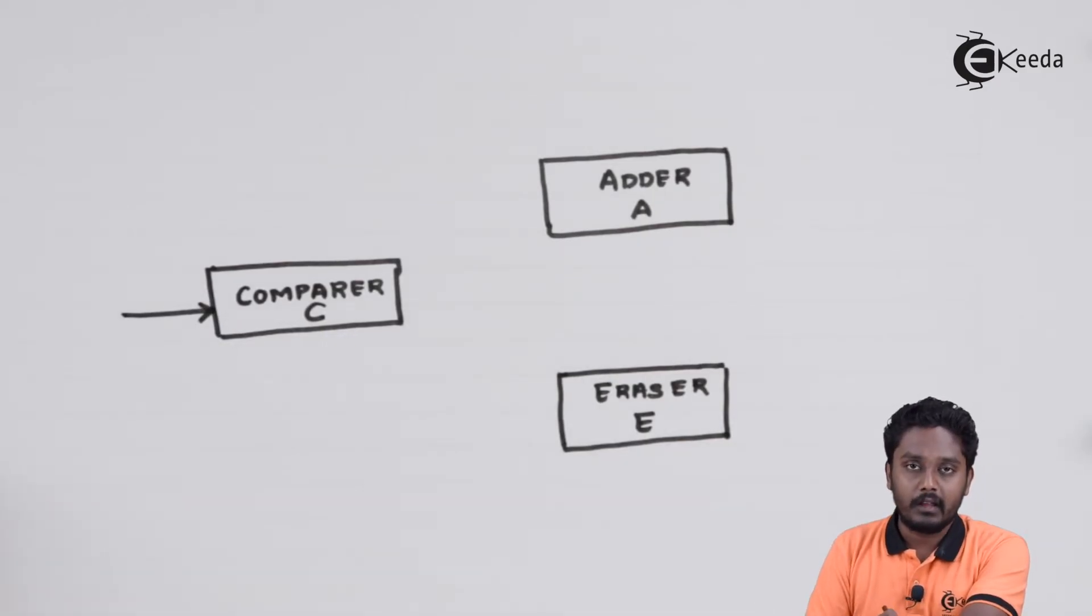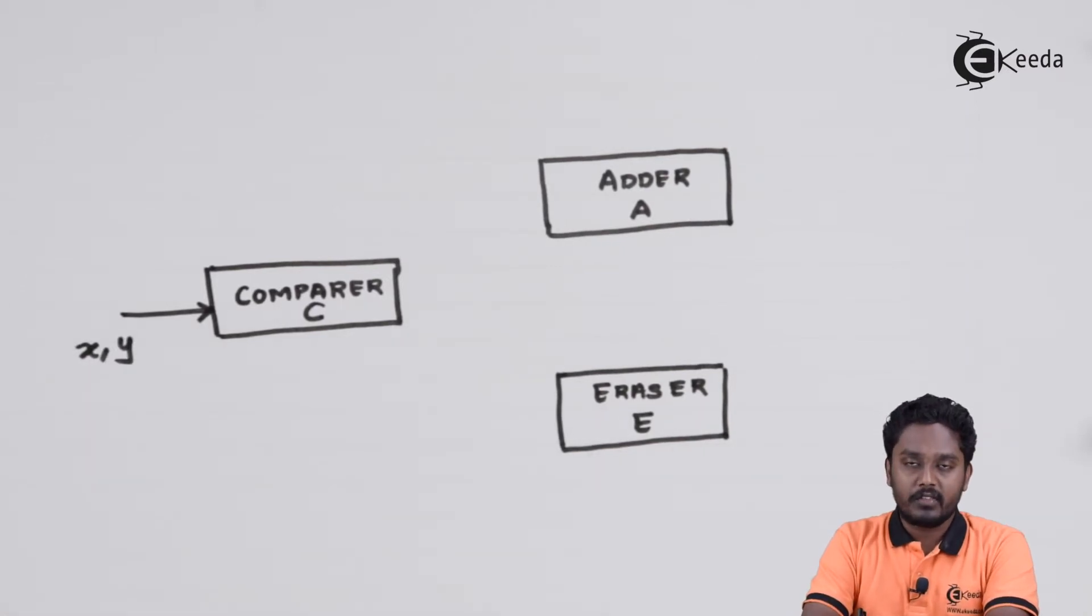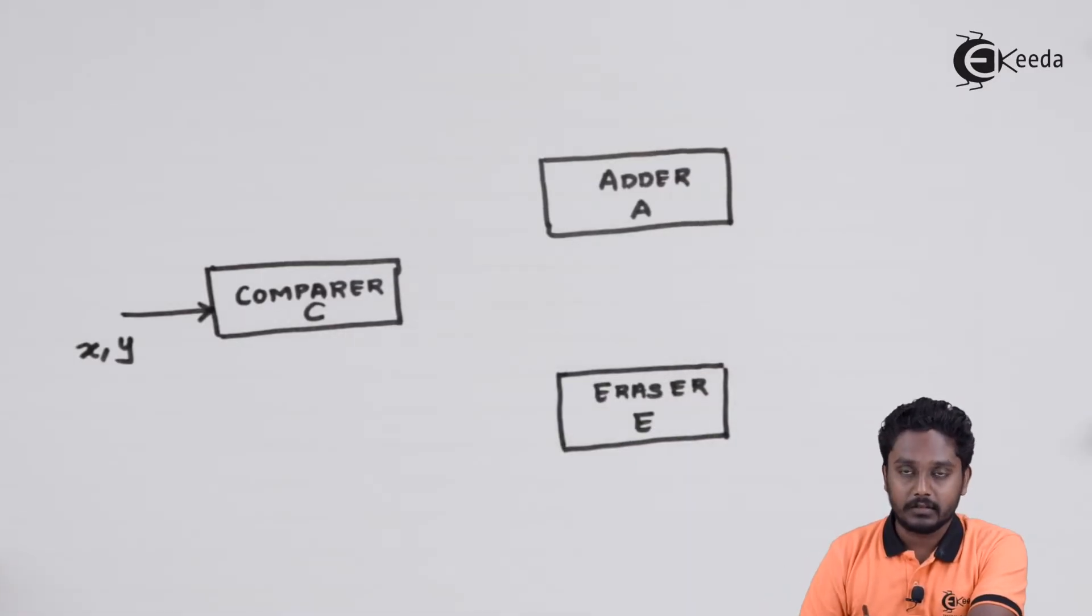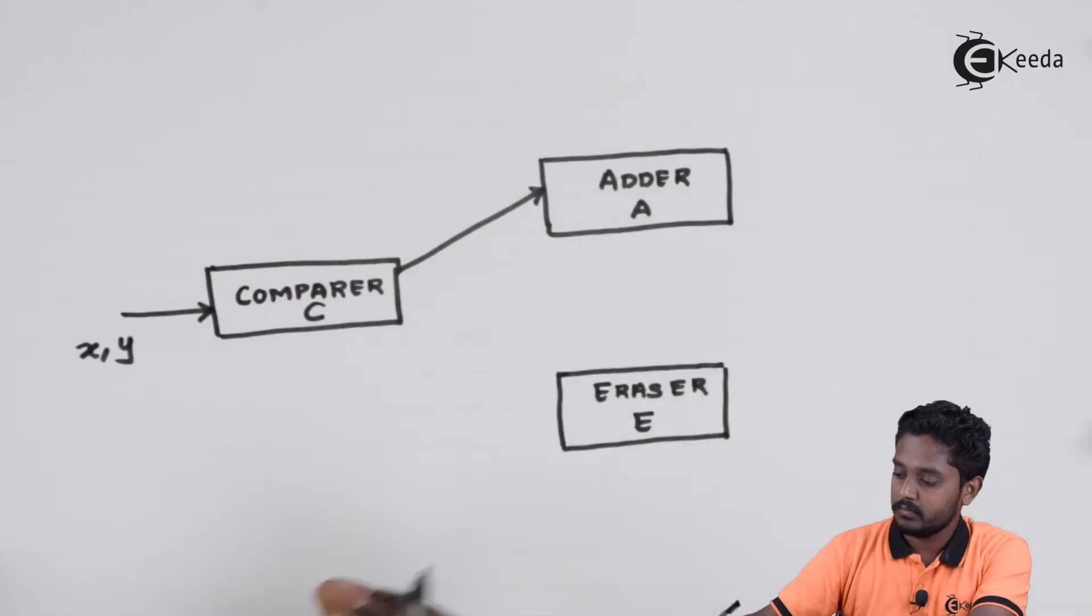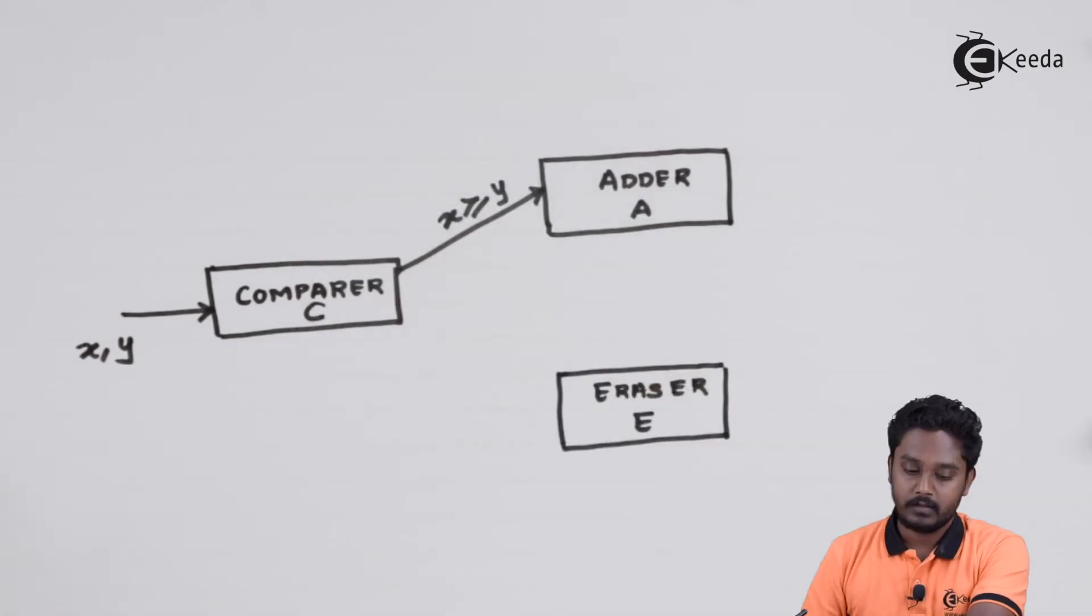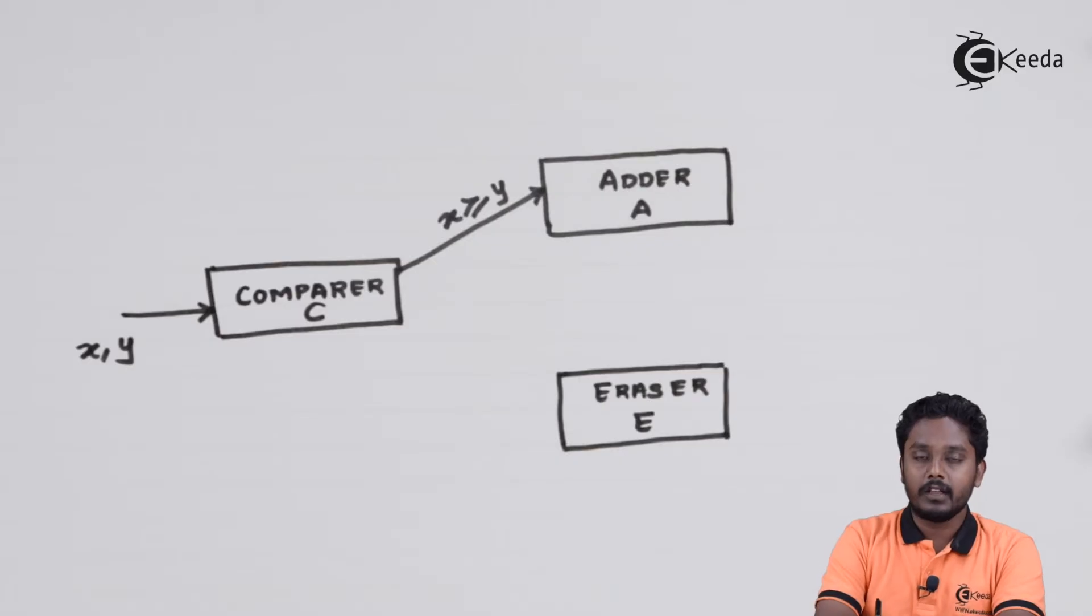First of all, we will supply input x and y to the comparator. Now if x is greater than or equal to y, we will activate the adder. If x is less than y, we will activate the eraser.